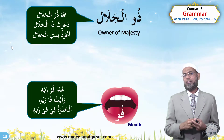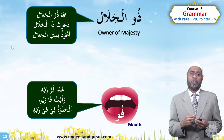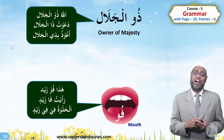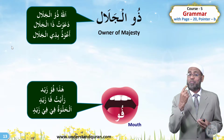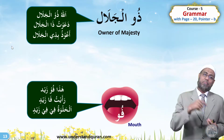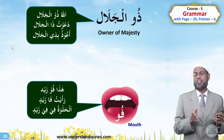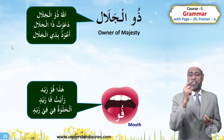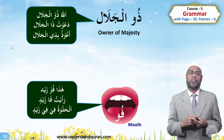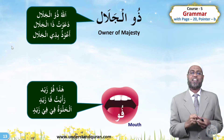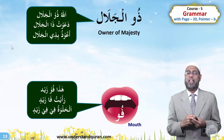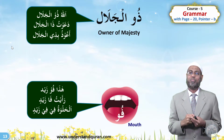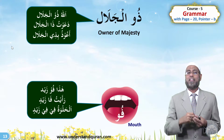Now for Fu: Hada Fu Zayd — this is the mouth of Zayd. Ra'aytu Fa Zayd al-halwatu — I saw the mouth of Zayd — the sweetness. Fi Fi Zayd — in the mouth of Zayd. So the first fi means 'in' and the second Fi is the noun 'mouth'; that will help you remember it.